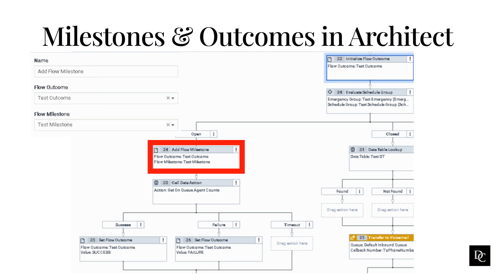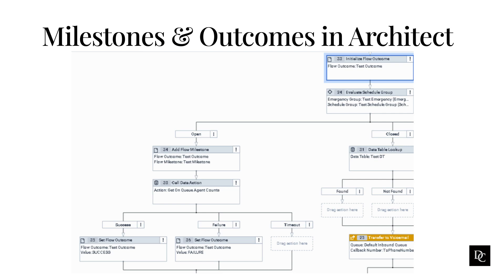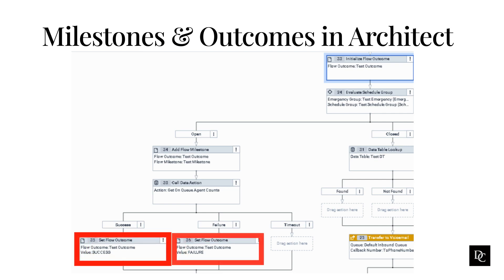Use the Add Flow Milestone action in Architect flows to generate more granular reporting for flow outcomes. Access to flow milestones helps build reporting around the customer journey. In the name field, type a distinctive name for the action, or leave the default text 'Add Flow Milestone.' The label you enter here becomes the action's name displayed in the call, chat, email, and messaging flow structure. In the flow outcome field, click the list and choose the flow outcome for this task action. In the flow milestone field, click the list and select the flow milestone for this task action. Use this action to define a potential outcome that the system tracks as success or failure when an interaction reaches a certain point in the flow. This action is available in the flow category of the task editor's toolbox for call, chat, email, and messaging flows, excluding in-queue call flows.